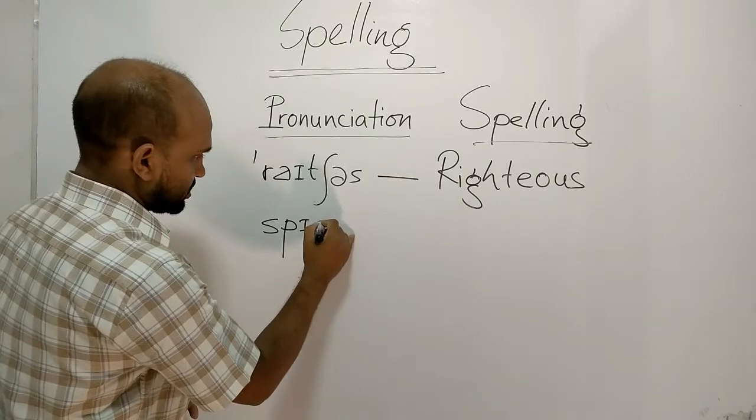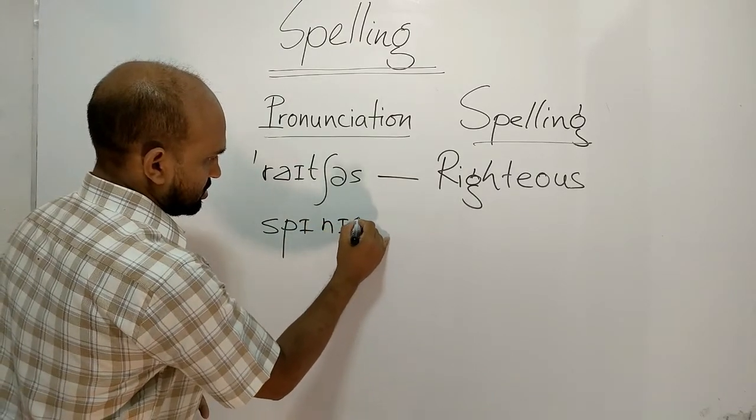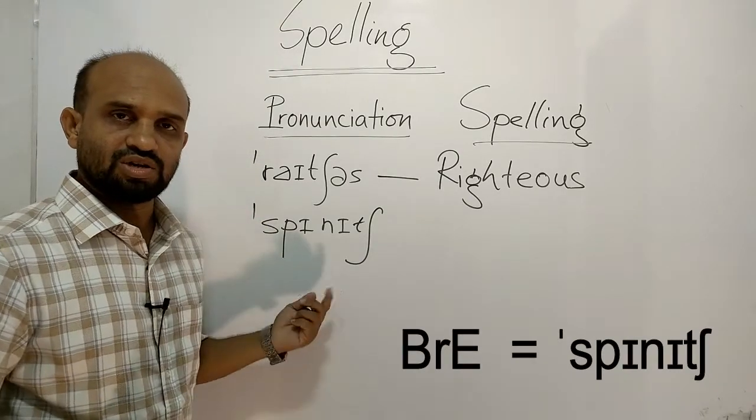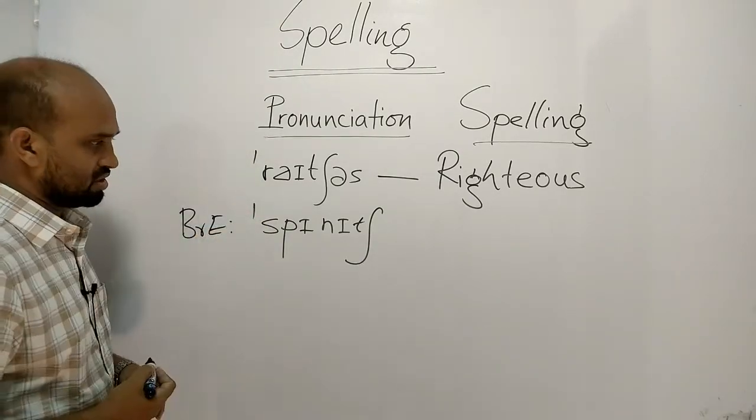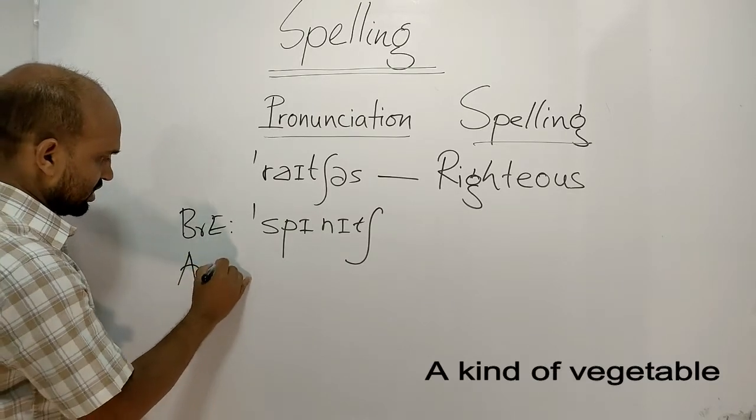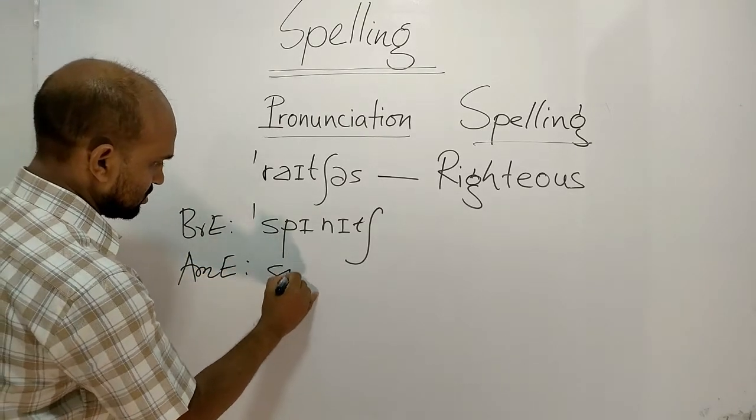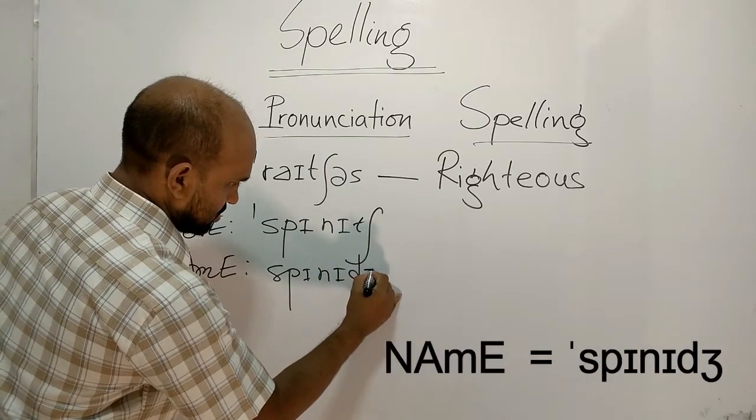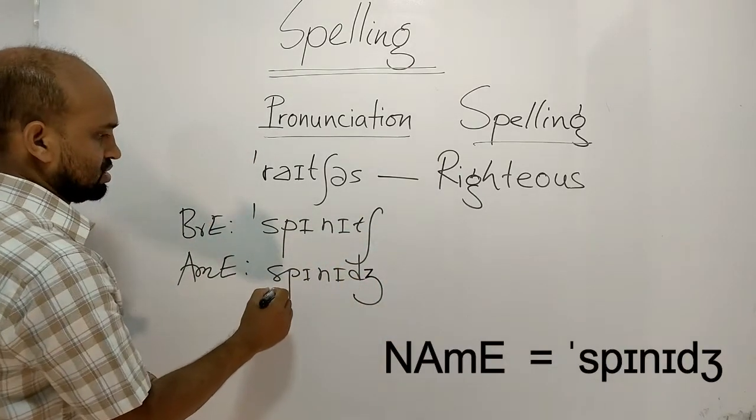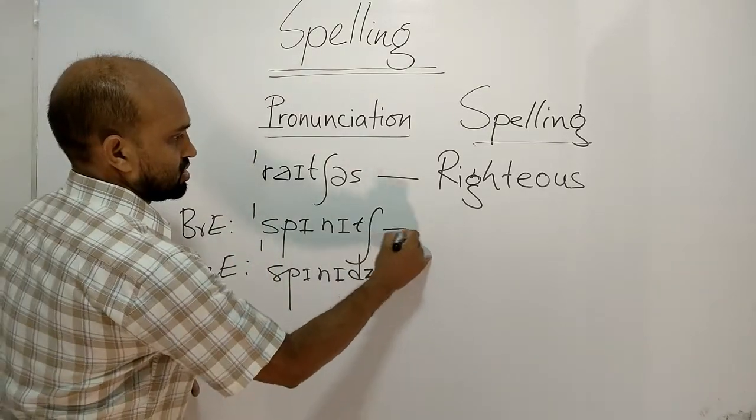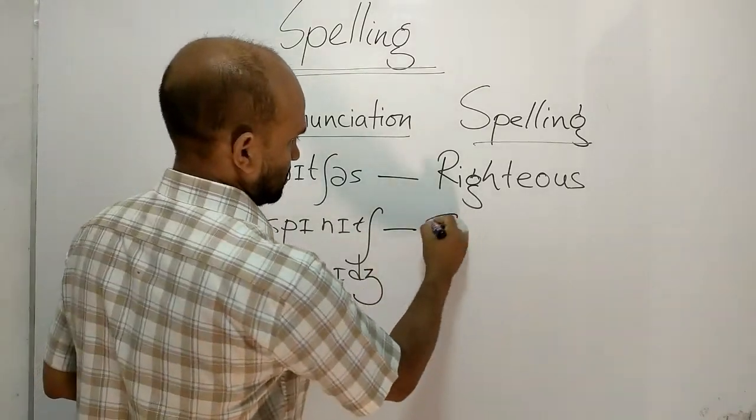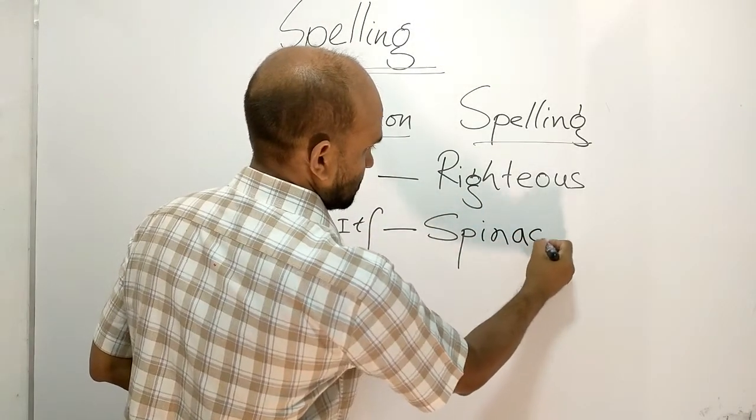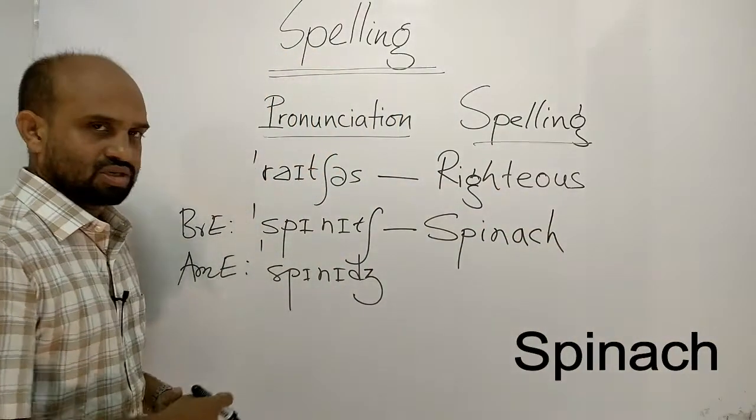Next word is spinach, a kind of vegetable. This is in British English and in American English the sound is spinach. Spelling is S-P-I-N-A-C-H, spinach.